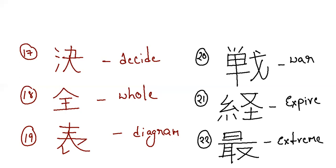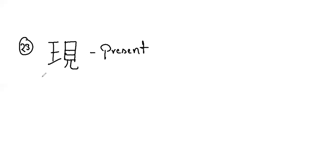Next is the kanji for present. It has eleven strokes: one through eleven. This is the kanji for present.